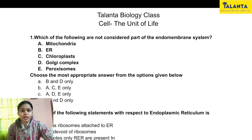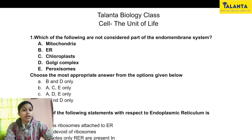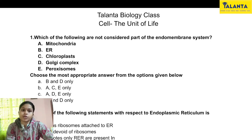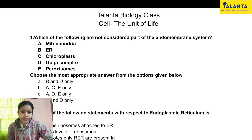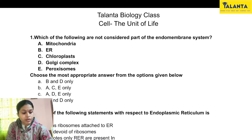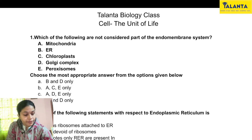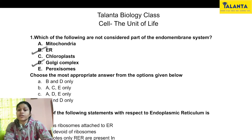Next, we have chloroplasts. Chloroplasts are a component of plant cells only, not animal cells. So the endomembrane system, which is present in both plant and animal cells, obviously doesn't include chloroplasts. Next, we have the Golgi complex, which is associated with packaging of proteins. These proteins come from ER after modification and processing. So Golgi complex and ER are parts of the endomembrane system.